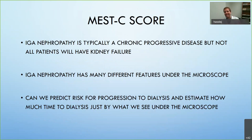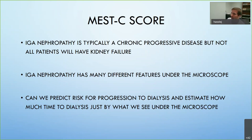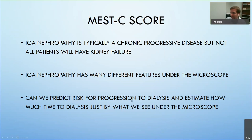Now we come to the MEST-C score. IgA nephropathy is usually a chronic progressive disease, but the problem is some patients never progress toward kidney failure, and some even have spontaneous regression. The question is how do you tell who's going to do what? The MEST-C score was created to determine, just looking under the microscope, who has a greater risk for needing dialysis in the future and how long before they'll need it.